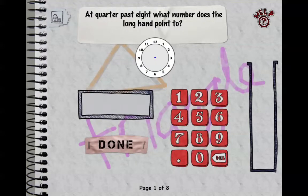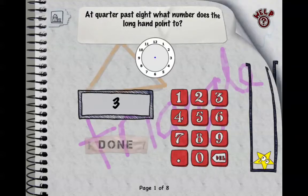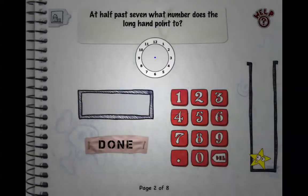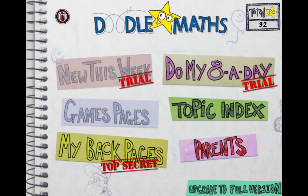Quarter past eight, what number does the long hand point to? It points to the three and it's the same thing. Obviously before I've done on the hour and quarter past and quarter to and half past, and I've also done 2D shapes, so that's what gets pulled into the practice.